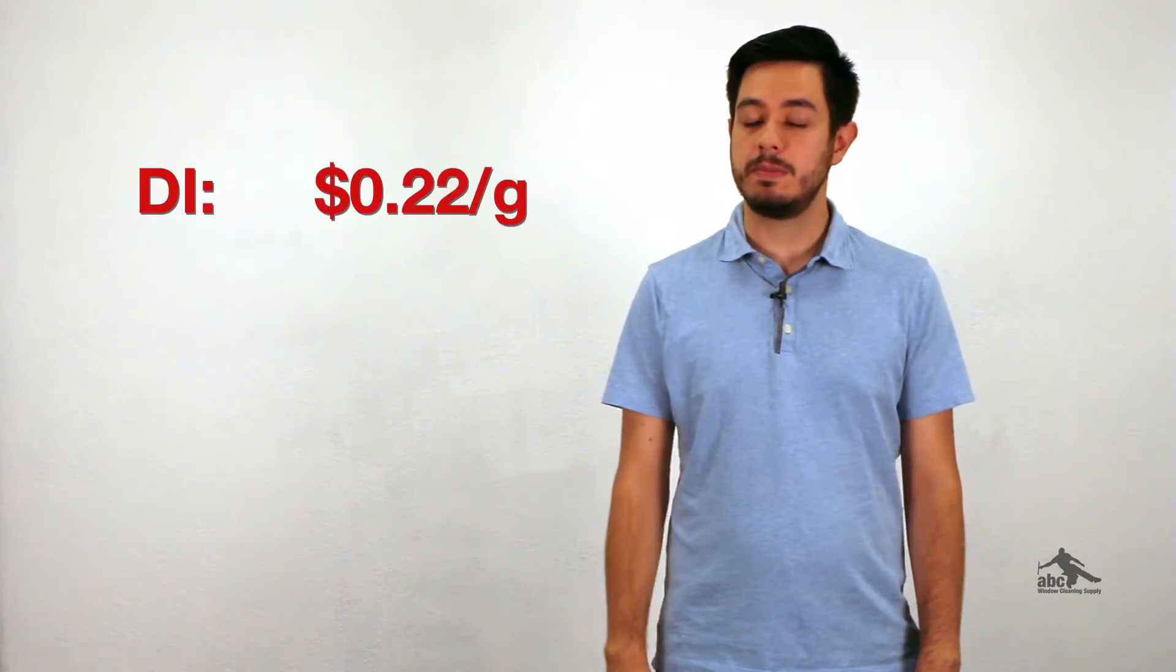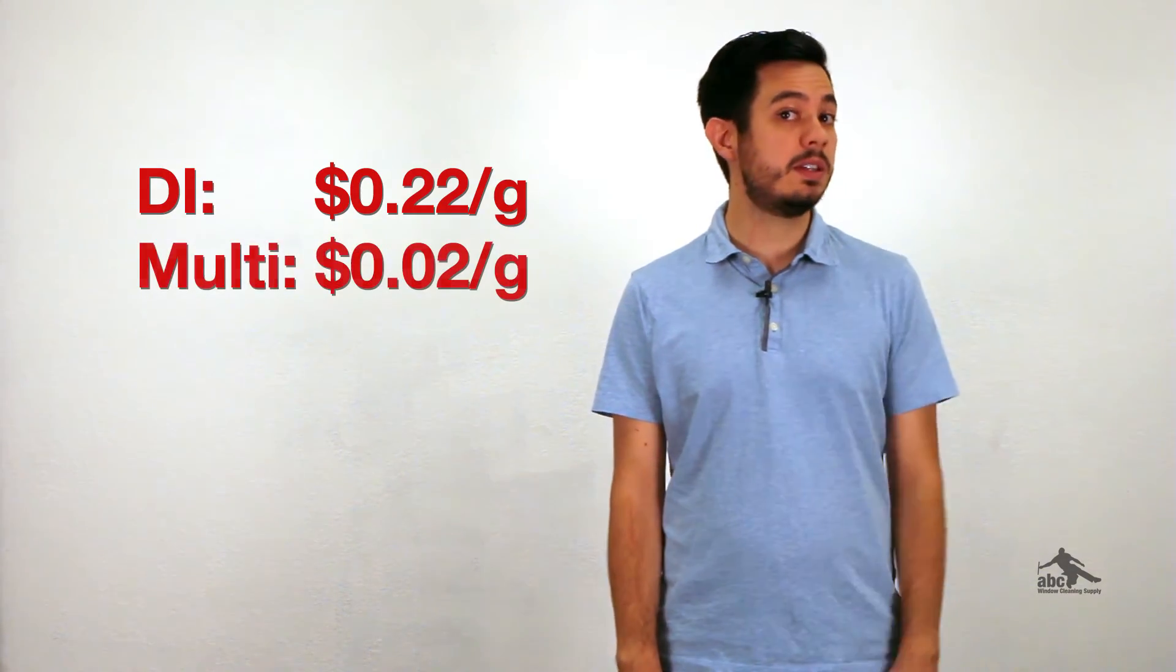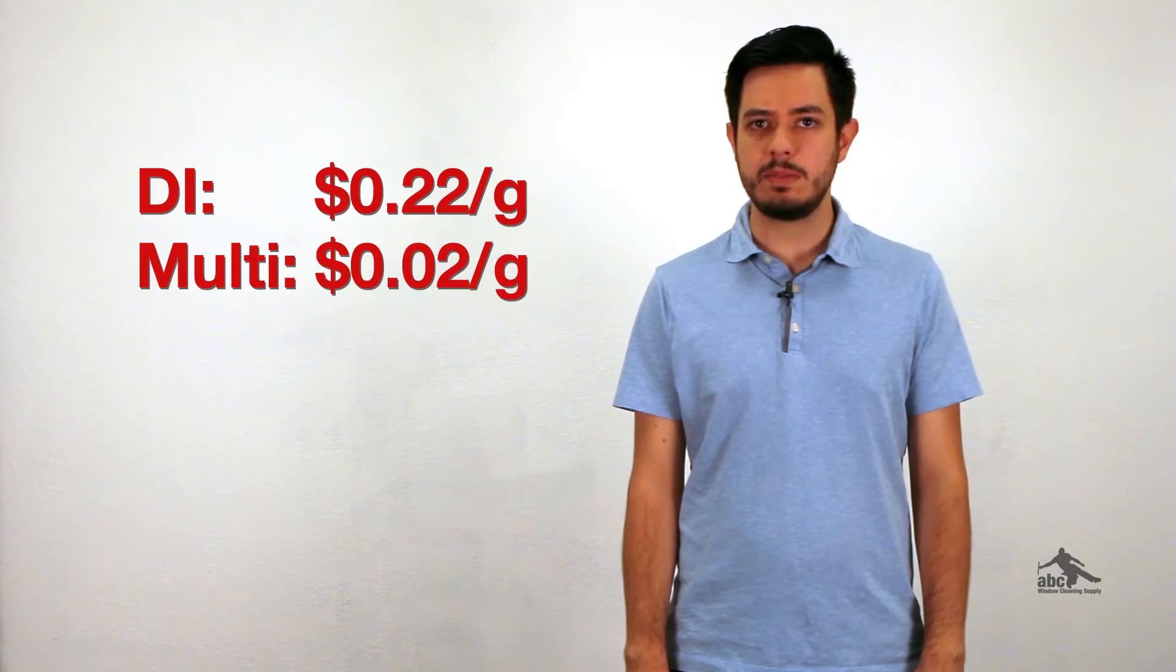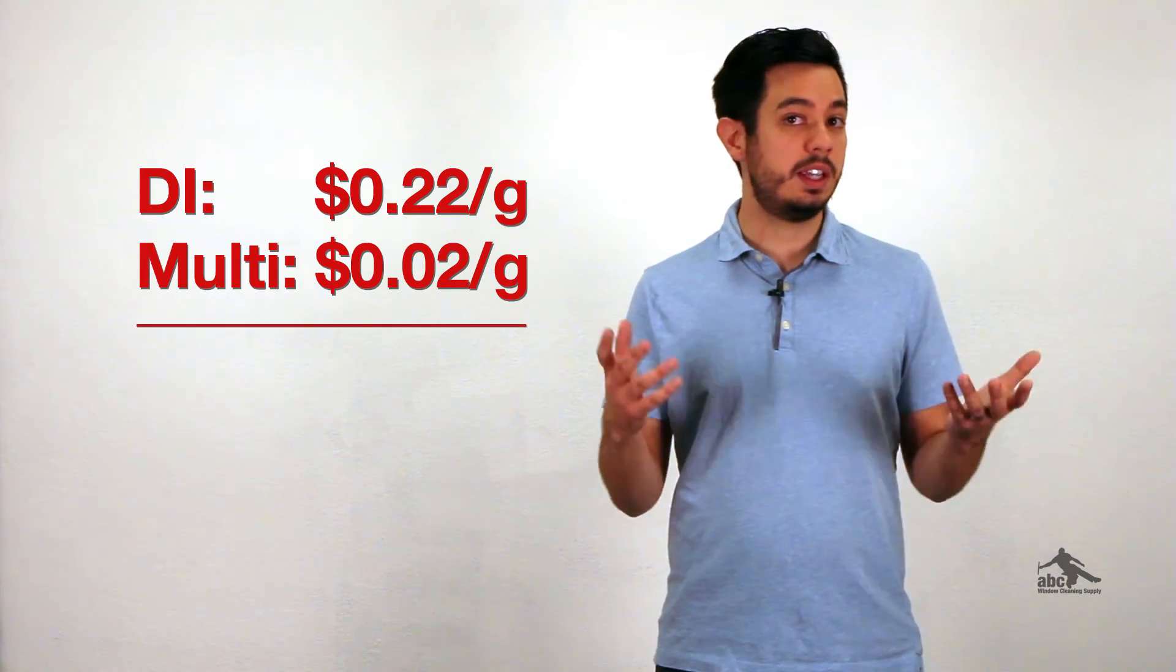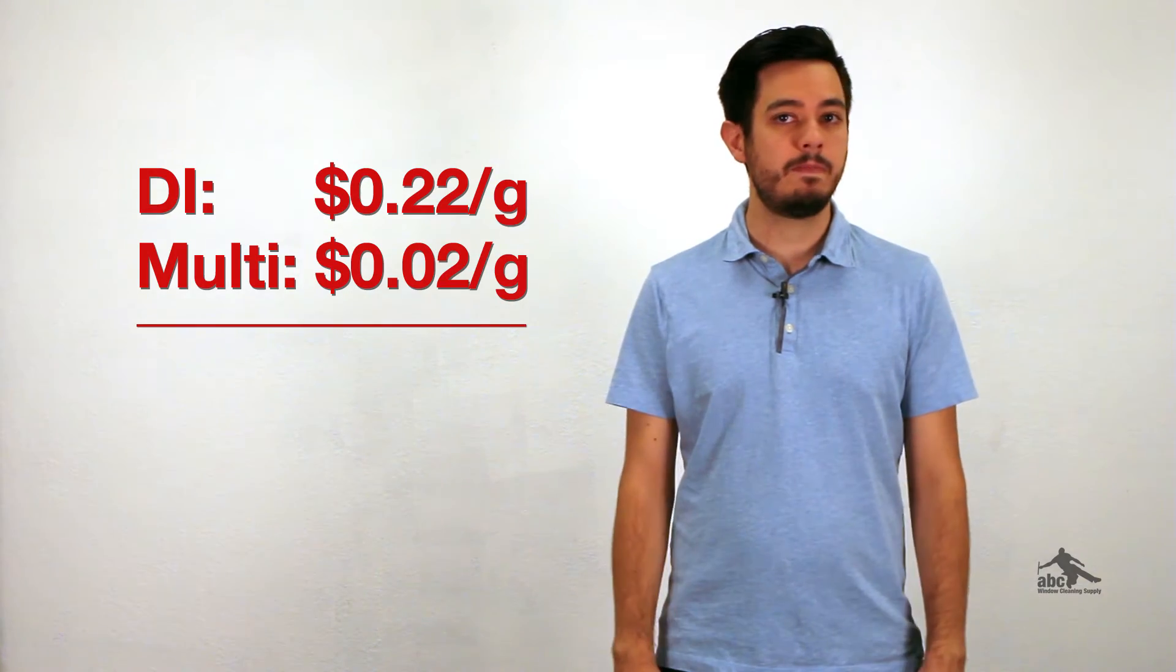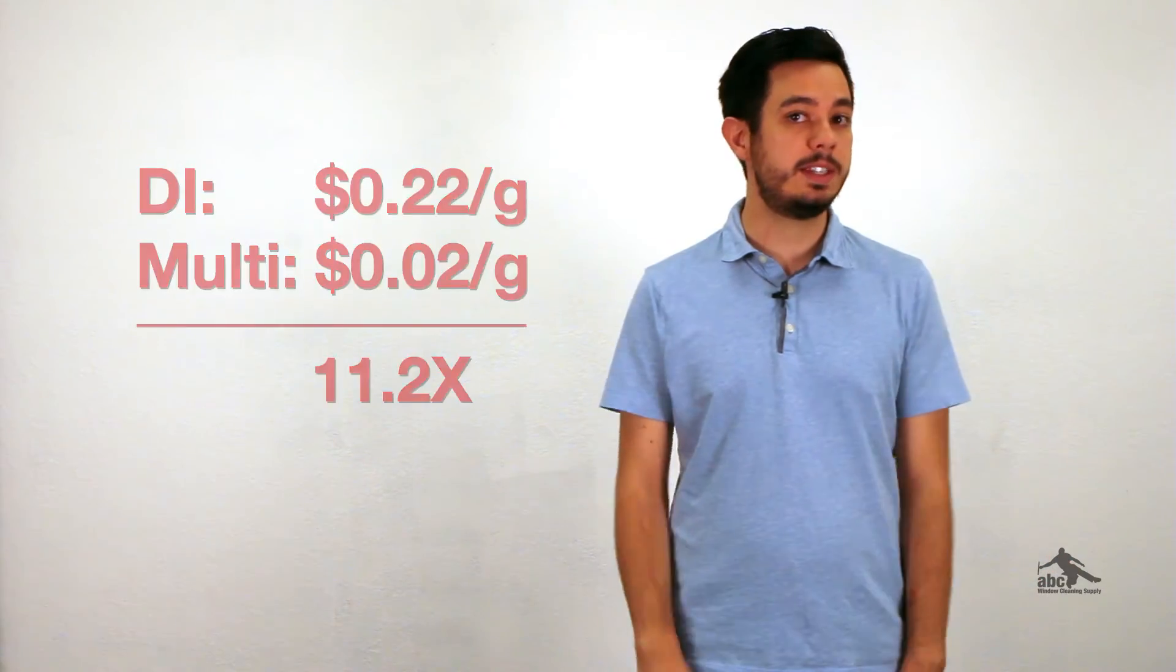Let's go ahead and compare these numbers. The DI only system came out to just about 22 cents a gallon. The multi-stage on the other hand came out to just about 2 cents per gallon. If we calculate that out, we see that the DI system in this case is 11.2 times more expensive to run per gallon than the multi-stage.